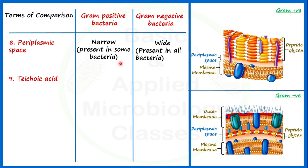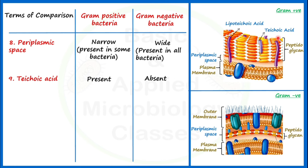Let's see the ninth point of difference: teichoic acid. Teichoic acids are present in gram positive bacteria and absent in gram negative bacteria. Teichoic acids exist in two forms: cell wall-linked teichoic acid and membrane-linked teichoic acid attached to membrane lipids, which is called lipoteichoic acid. Chemically, teichoic acids are polymers of glycerol and ribitol. They are also responsible for contributing a negative charge to the bacterial cell surface.